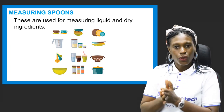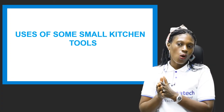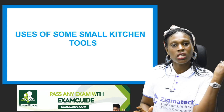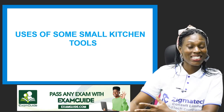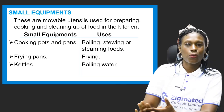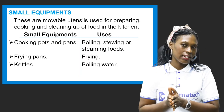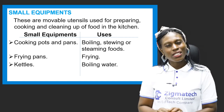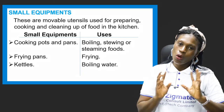Now let's look at the uses of some small kitchen tools. We talked about kitchen equipment earlier; now we're looking at small kitchen tools — the ones that can easily be moved about. These are movable utensils used for preparing, cooking, and cleaning up food in the kitchen. We have a whole lot of them used in our homes. We'll look at a few and their uses.